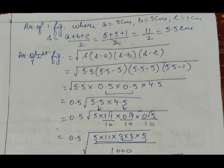Heron's formula says: area = √(s × (s−a) × (s−b) × (s−c)), where a, b, and c are given to us: a = 5 cm, b = 5 cm, c = 1 cm. We can find s from the formula s = (a + b + c) / 2. After putting the values in the formula, we get s = 5.5.